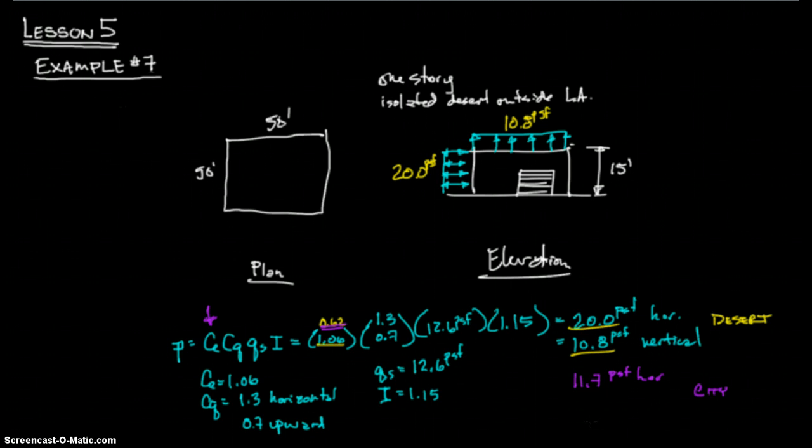This is example number two, and this is example number three. I'm going to do also 10.8 divided by 1.06, times 0.62, and you get 6.3 PSF vertical. So if you're in the city, you're going to have 11.7 PSF and 6.3 PSF.